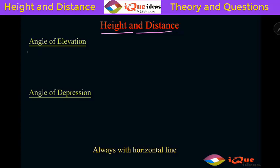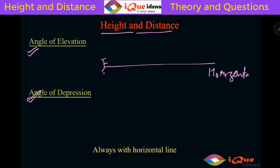The very first thing we need to understand is the angle of elevation and the angle of depression. A normal person has an eye level, and when a person sees with his eyes, he sees straight. This line is called the horizontal line. So anything that you see is with respect to the horizontal line.